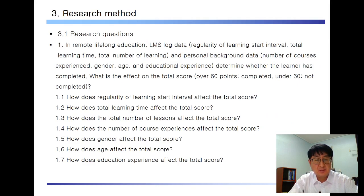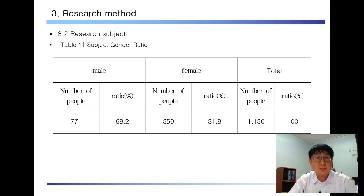The research question analyzed the effect of seven independent variables on the total score as the dependent variable. Research subjects included male students: 771, representing 68.2%, and female students: 359, representing 31.8%, for a total of 1130 participants.